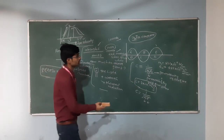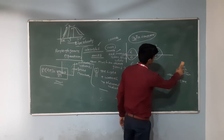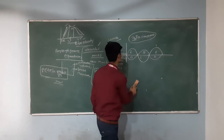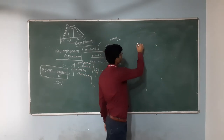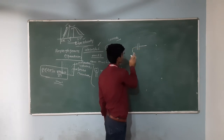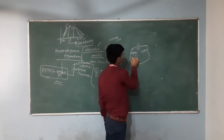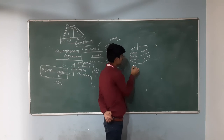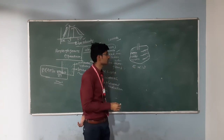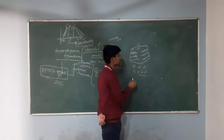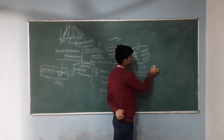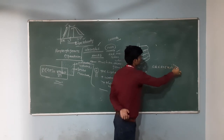Let us see the black body radiation problem solved by Max Planck. He assumed that the energy of a black body is directly proportional to the frequency of radiation. He considered a black body in a hollow container consisting of simple harmonic oscillators with some charge on them. His assumption: energy E is proportional to ν, where ν is the frequency of these small oscillators. Removing the proportionality sign: E = hν. Here h is Planck's constant, h = 6.625 × 10⁻³⁴ joule-seconds.